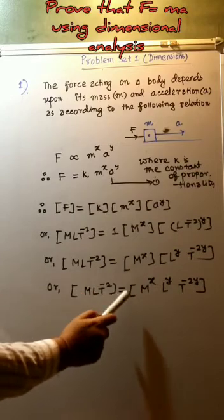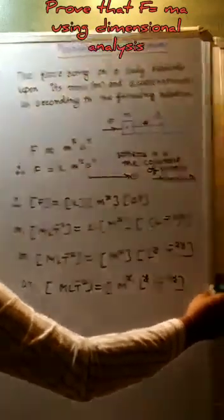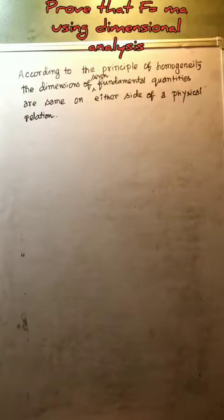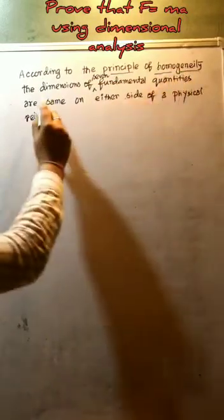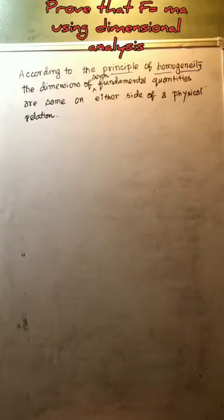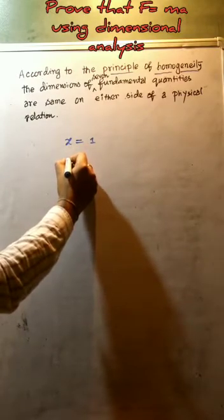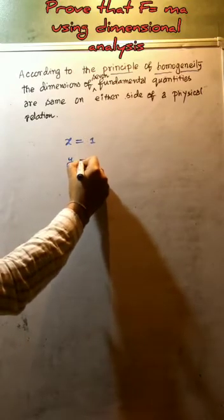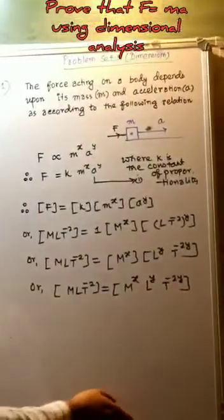Finally we get M·L·T to the power minus 2 equals M to the power X, L to the power Y, and T to the power minus 2Y. Now we apply the principle of homogeneity. According to the principle of homogeneity, the dimensions of the seven fundamental quantities are the same on either side of a physical relation. Comparing the powers: the power of mass gives X equals 1, and comparing the power of L gives Y equals 1.